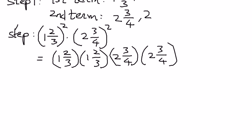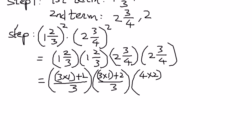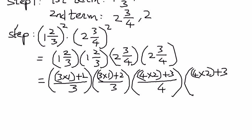Now we are ready to simplify the mixed fractions. We take the denominator of the fraction, multiply it to the whole number on the side, take the product, and then add it to the numerator. So the first part becomes: 3 times 1 plus 2, divided by 3 — and the same for the second instance. The second mixed number becomes: 4 times 2 plus 3, divided by 4 — and likewise for its second instance.